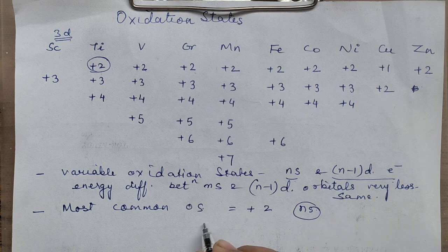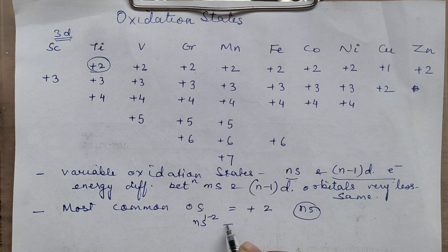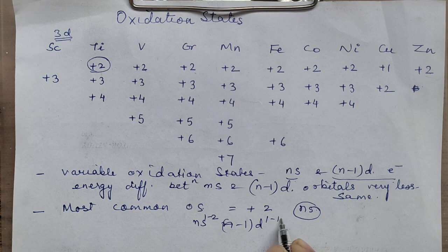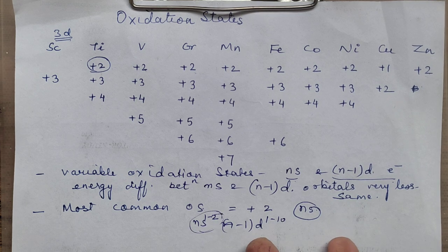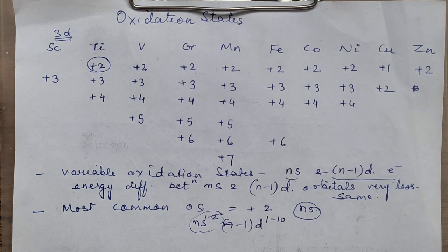Why is the most common +2? That is because of the participation of Ns electrons. In the configuration of D block elements, majorly it is Ns2 — in one or two cases it is 1 also, but majorly it is 2. So Ns 1 to 2, N-1D 1 to 10. In the valence shell, most of them have 2 electrons, and these valence electrons can participate in bond formation easily, so the most common oxidation state is +2.